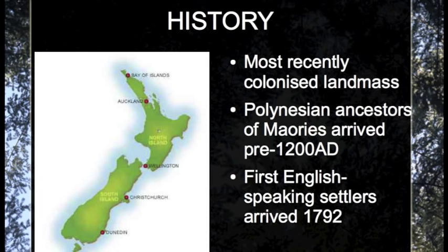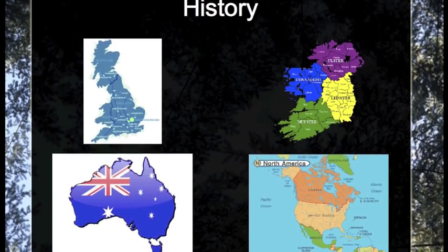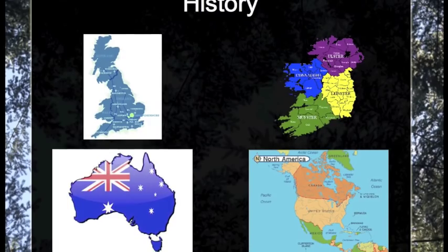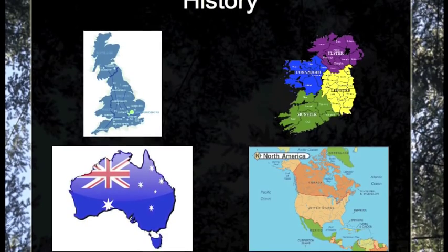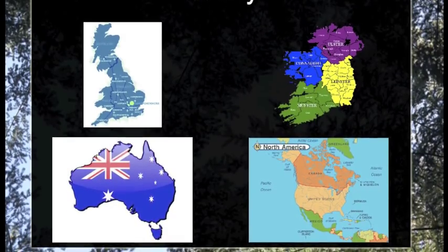New Zealand was actually the last inhabitable landmass in the world to be colonised, and as the most recently established variety of English, it is the only variety recorded from start to present. The Polynesian ancestors of the Maoris arrived in New Zealand pre-1200 AD, and then the first English-speaking settlers arrived in 1792. Elizabeth Gordon from New Zealand's University of Canterbury called it a 'mixing bowl' due to the settlers bringing their own accents and varieties into the pot. Settlers arrived from Australia, Britain, Ireland, and America during the early 19th century, called Pakeha to the Maoris. But after British and Maori chieftains signed the 1840 Treaty of Waitangi — the founding document of New Zealand — huge numbers of people came from Britain and Australia, soon outnumbering the indigenous Maori.